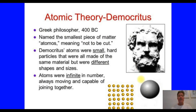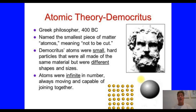The first guy to come up with the idea of the atomic theory was a Greek philosopher around 400 BC named Democritus. He basically theorized that if you cut something again and again and again, you must finally come to something that is some fundamental particle that can no longer be cut. He didn't do any experiments, but he theorized that this had to be the case.